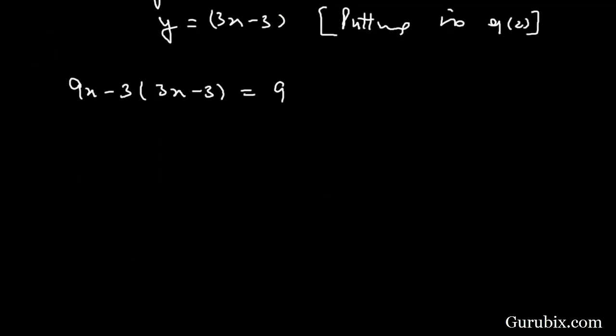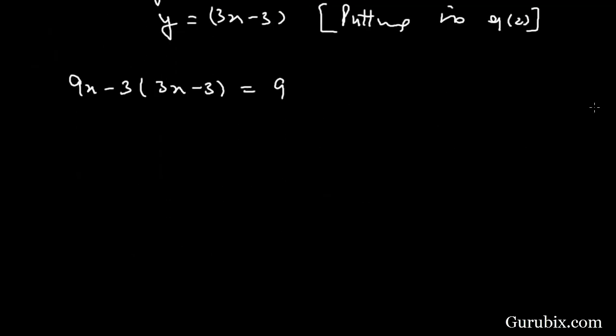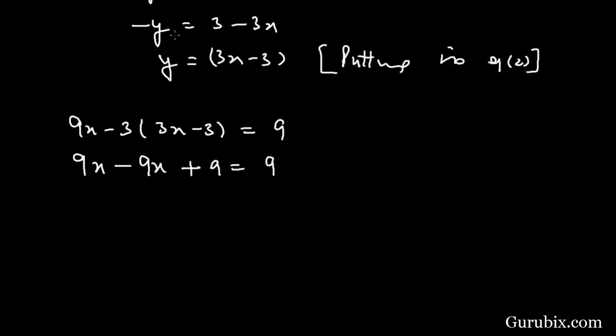If we further solve this equation, then we have 9x - 9x + 9 = 9. We can cancel out the 9x terms, therefore it will be 9 = 9.